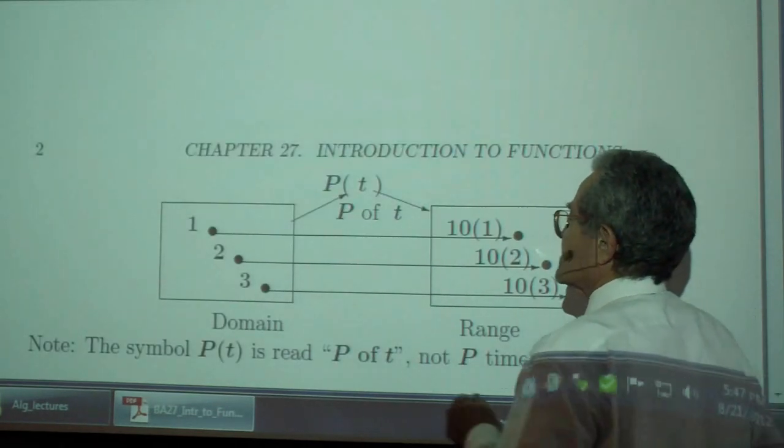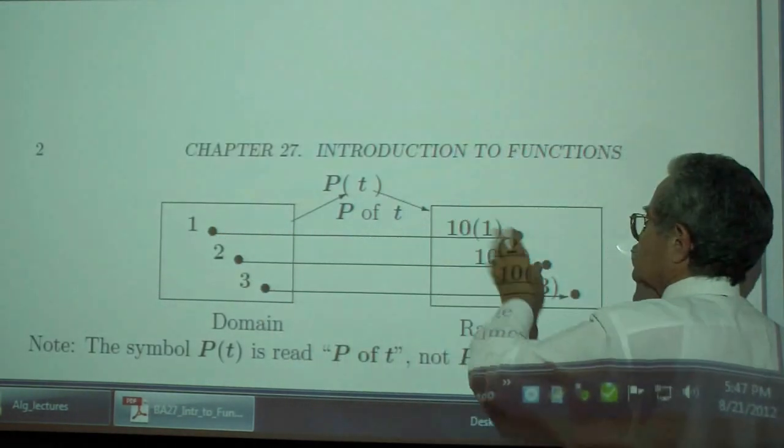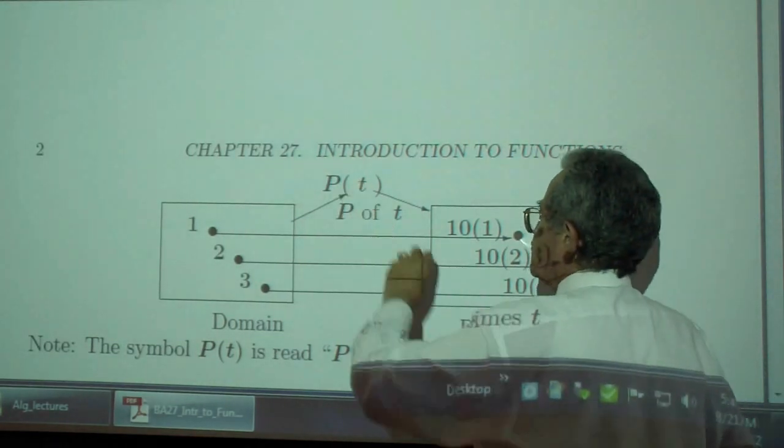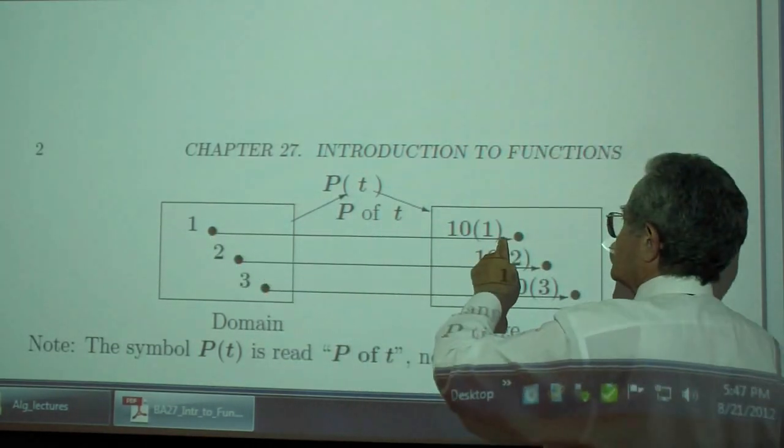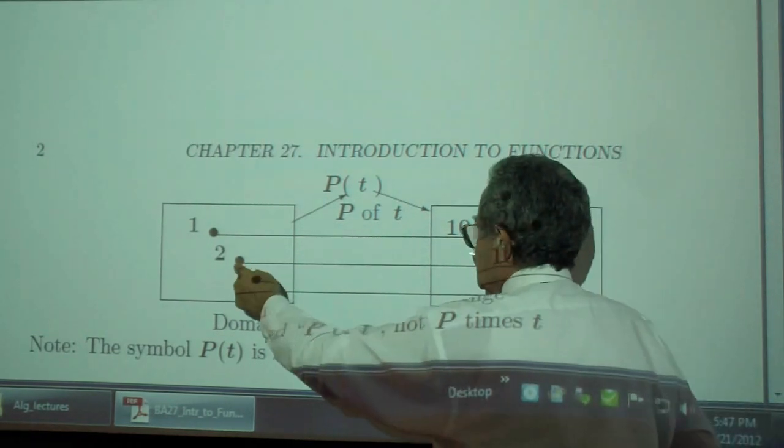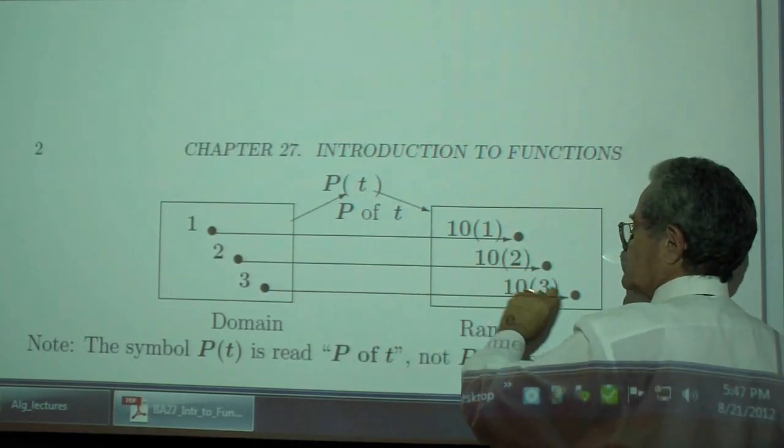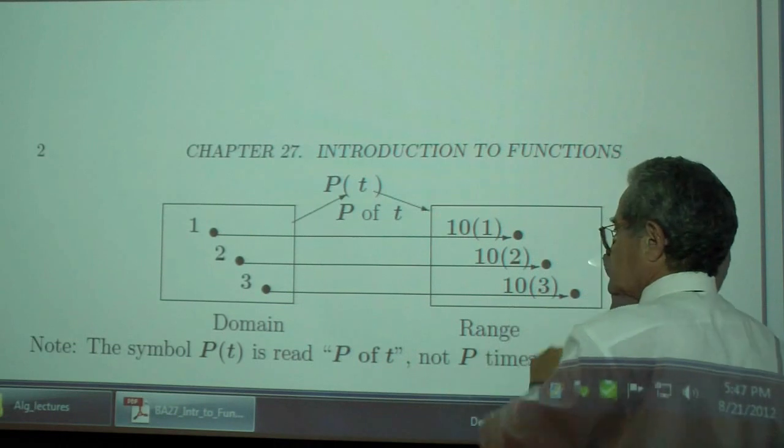Mapping. The domain, the range, the rule. The number 1 goes into the number 10 times 1. 2 goes into 10 times 2. 3 goes into 10 times 3.